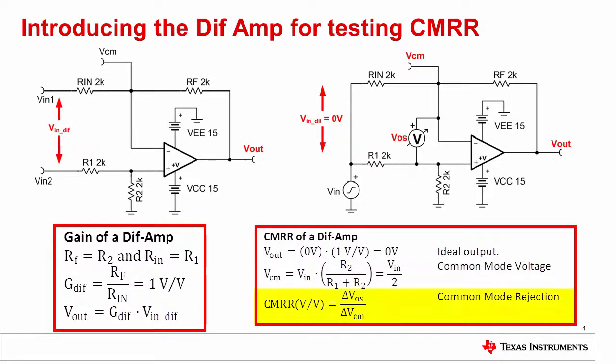Using this circuit, the common mode rejection can be calculated as the change in offset divided by the change in common mode voltage. Note that the effects of AOL are eliminated because the differential input and output are held constant at 0 volts.